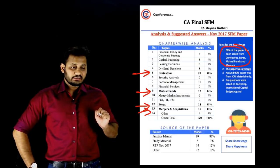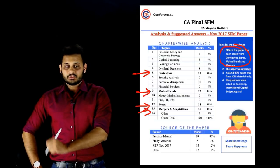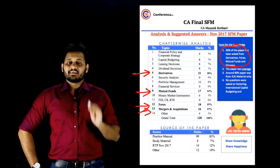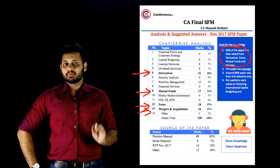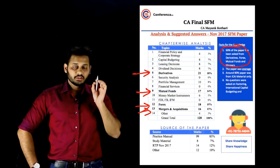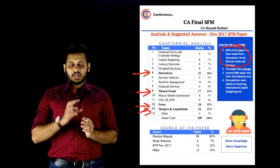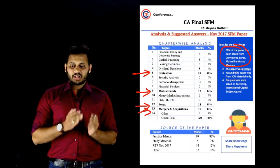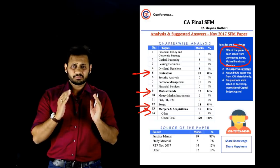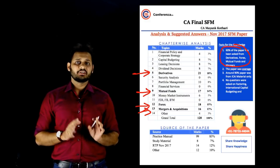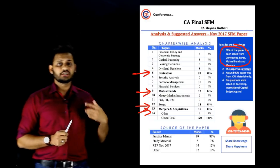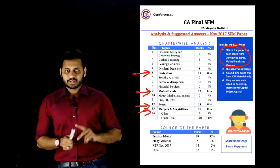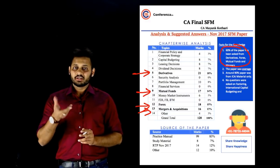The Institute's study material is very important. The Practice Manual is very important. You can trace 99 marks of the paper directly from the Institute's material. 70–75 marks had directly the same figures — you can see those questions in the Practice Manual.